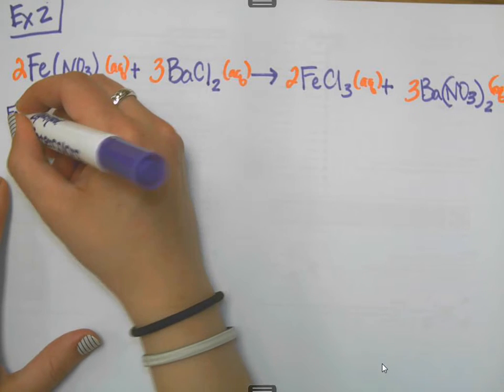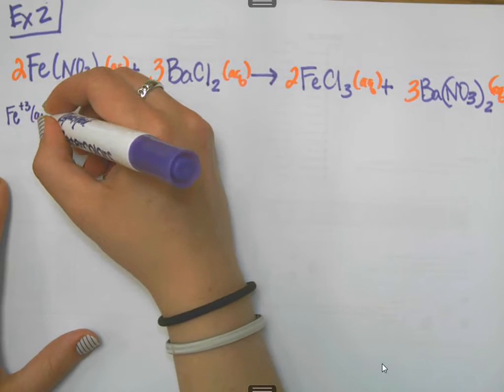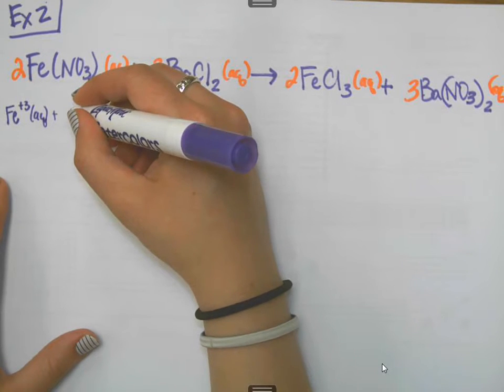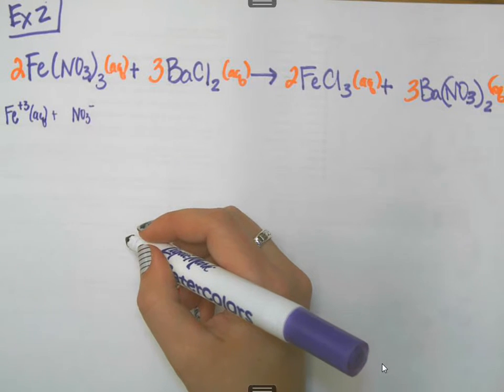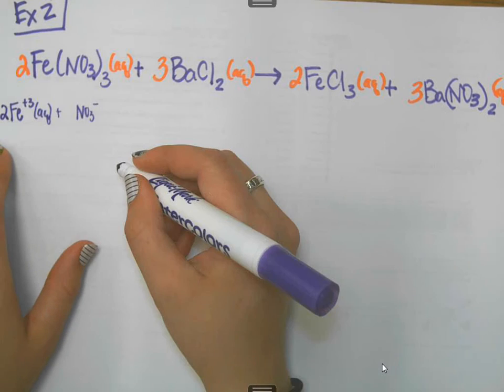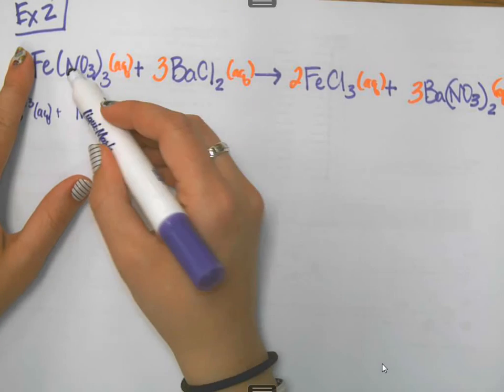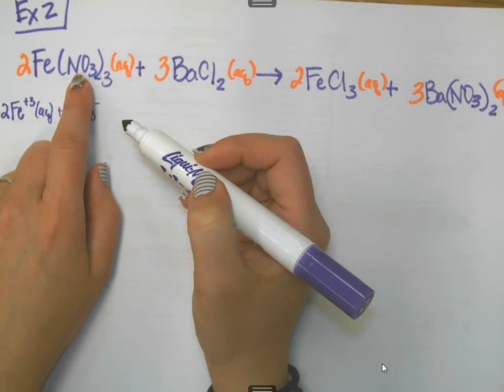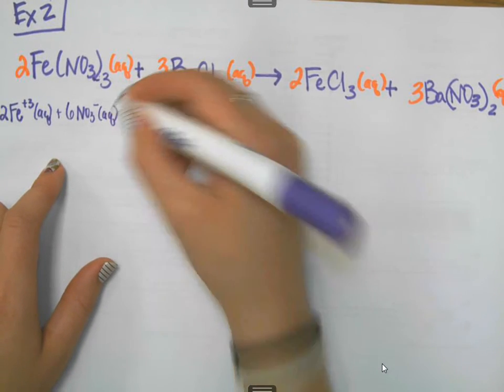Okay, iron and nitrate are going to break up into iron three, and it's going to be aqueous. And, then it's going to break up into nitrate, which is NO3 negative. And, then I'm going to work with the numbers. There are two irons because that two distributes through. And, without the two, there are three nitrates right there with the parentheses. But, there's two of the groups. There's three for every group and two groups. That will be two times three. There's actually six nitrates that are going to be formed from this.